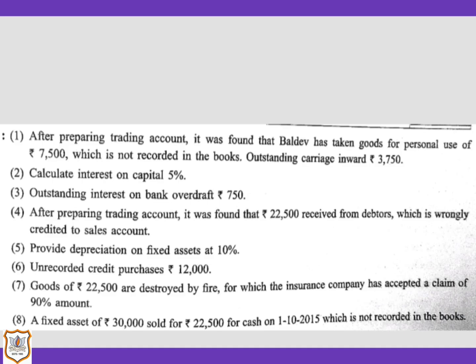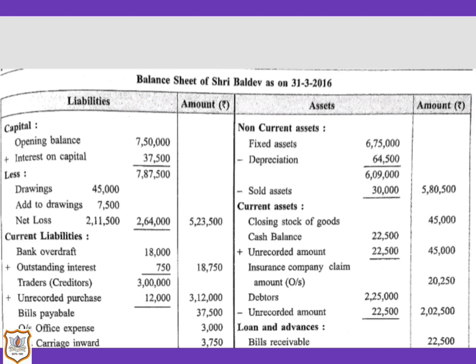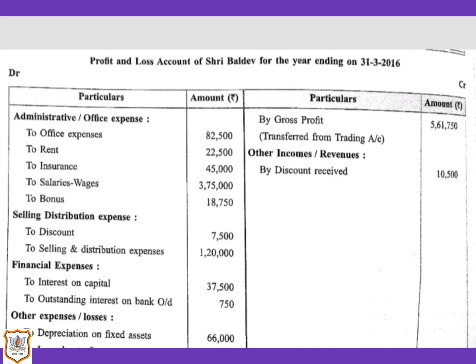In adjustment two, interest on capital is to be calculated at 5%. The interest on capital will be added to the opening balance of capital on the liability side of the balance sheet. The opening capital is Rs. 7,50,000, and 5% of that is Rs. 37,500. For the second effect, it will be debited to the profit and loss account as an indirect expense under the heading financial expenses — interest on capital, amount Rs. 37,500.